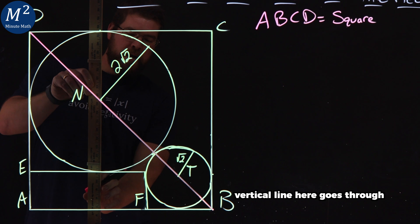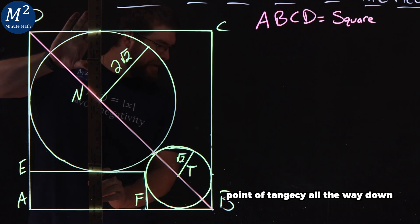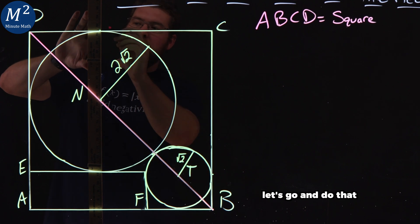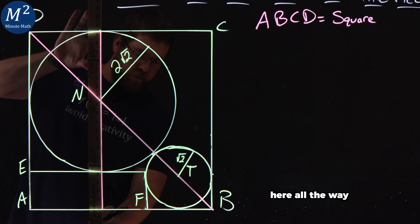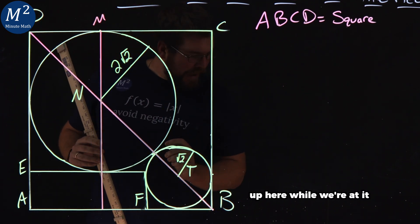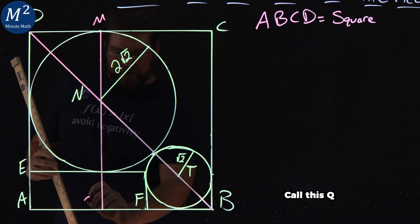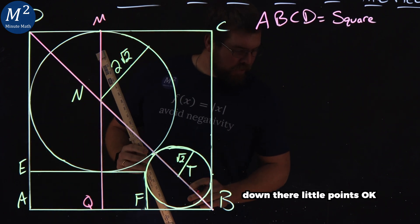I'm going to draw another vertical line here, goes through the point of tangency to the circle, point of tangency all the way down. Let's go do that here. All the way right there and let's go label some points. I call this point M up here. While we're at it, I call this Q, a little Q right down there.